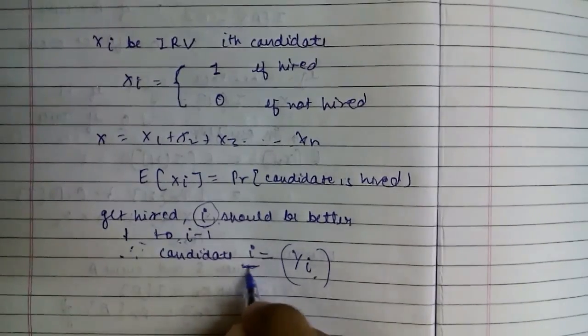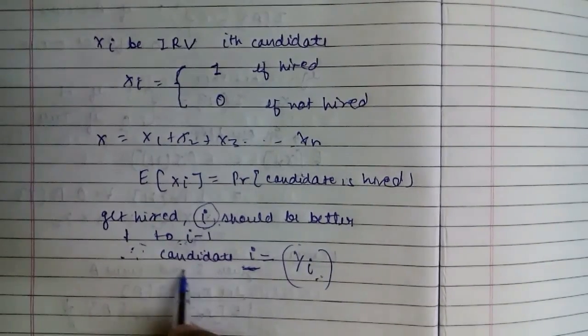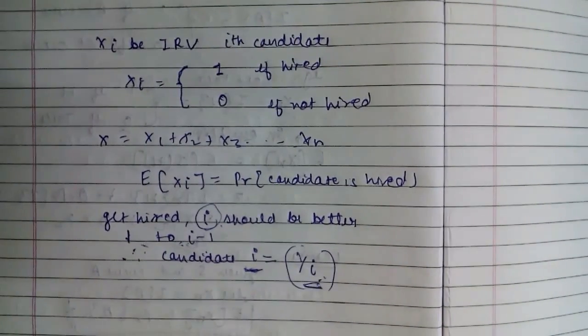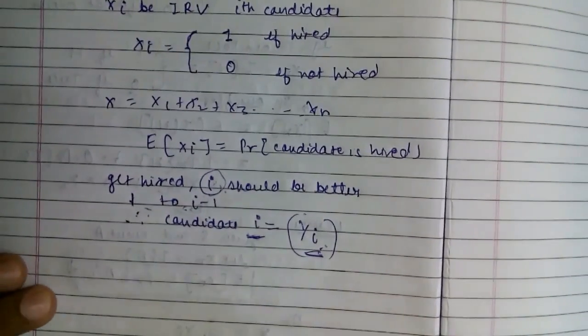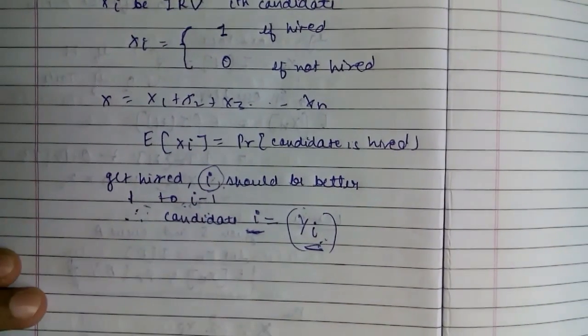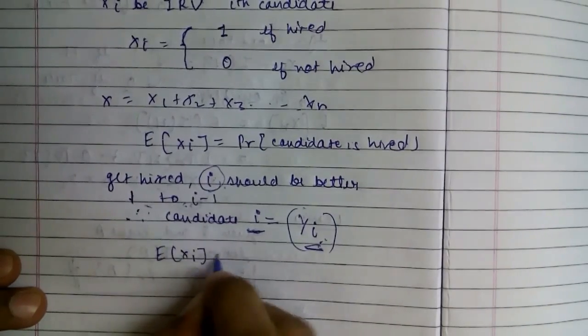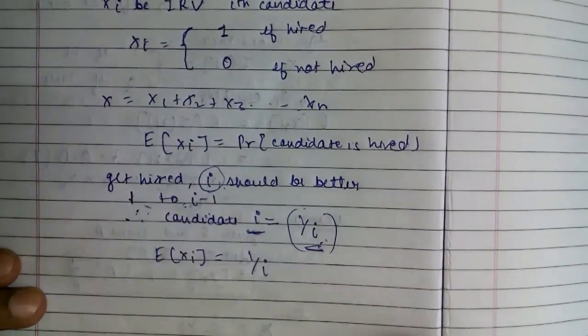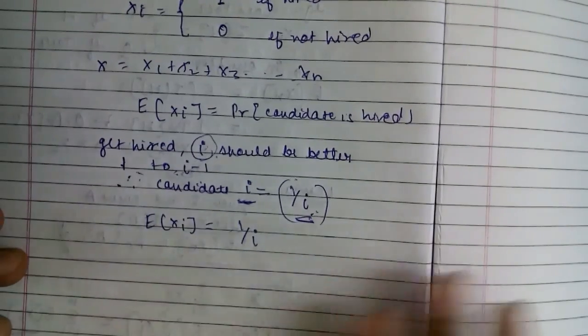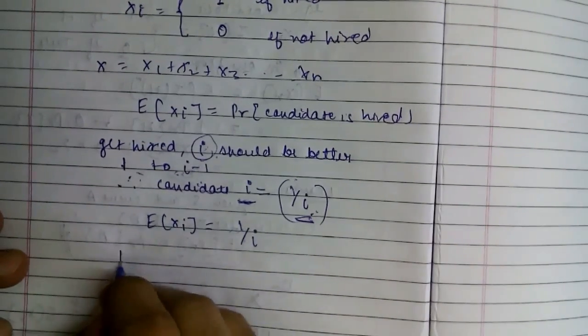So for candidate i, the probability is 1 by i. The expectancy of x_i to be hired is 1 by i. Now applying this for the whole example.